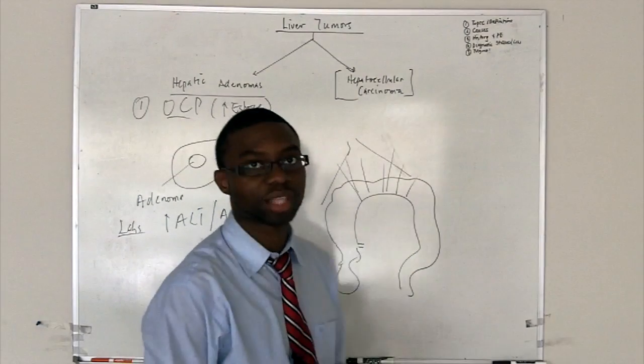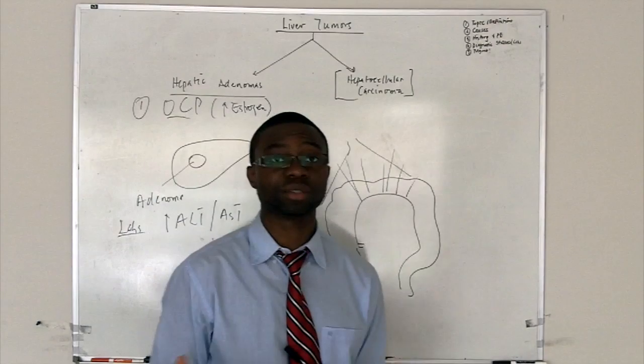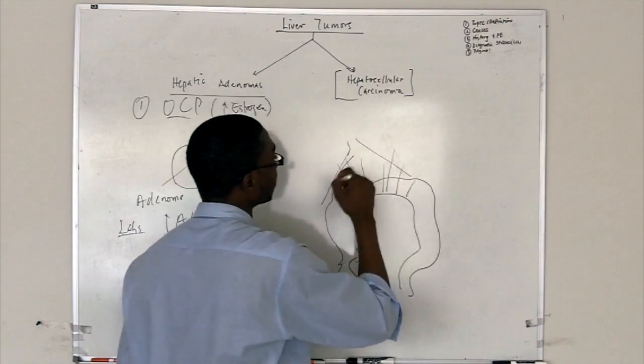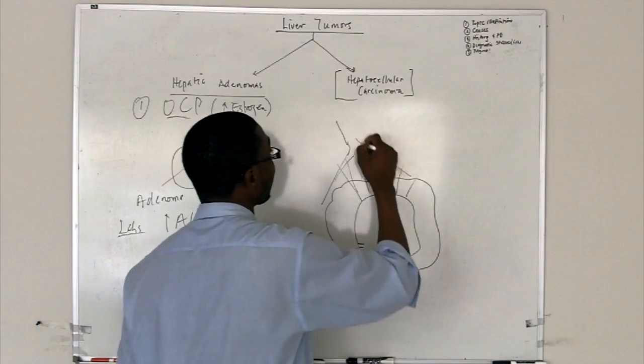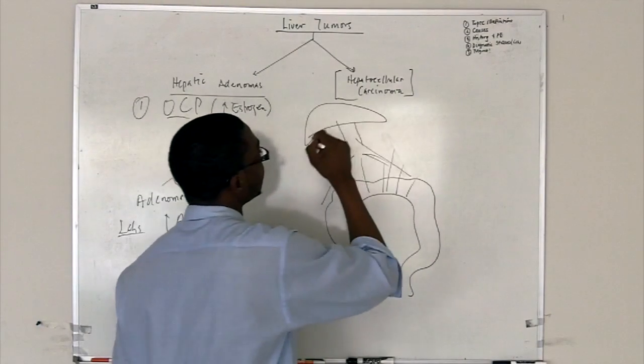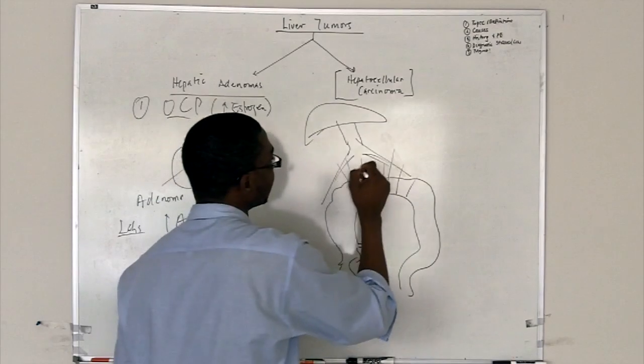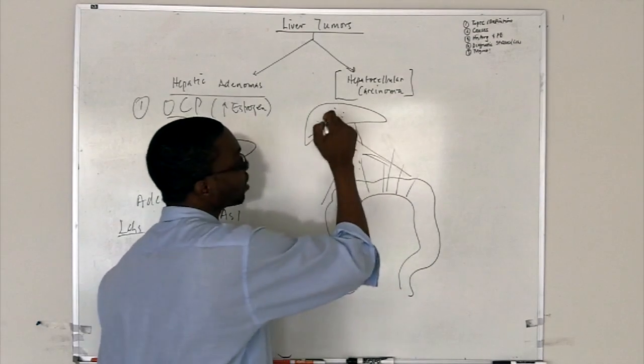Remember, if you need to understand anatomy, you can go back to my lecture on portal hypertension. You will see how the superior mesenteric vein and inferior mesenteric vein join together. Eventually it goes through the portal vein, and the portal vein is now going to go into the liver. And bam!